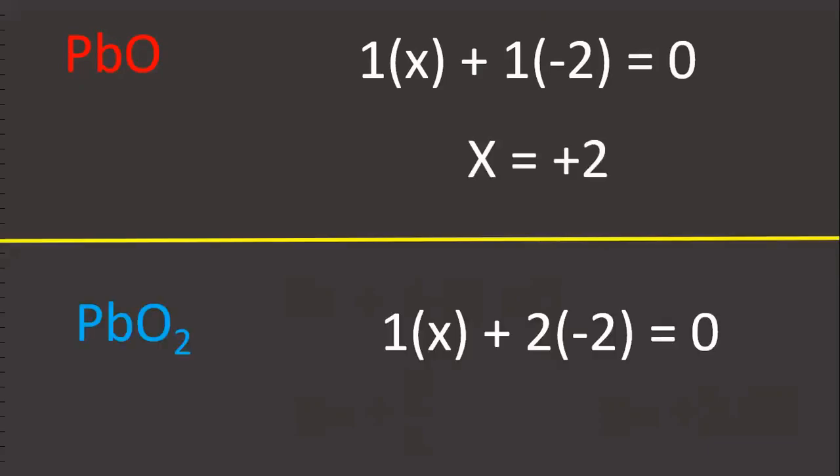Take PbO. PbO is also called litharge. Assume one lead atom is x. One oxygen atom is -2. Simplify this one plus 2. In PbO₂, simplify this one, plus 4.